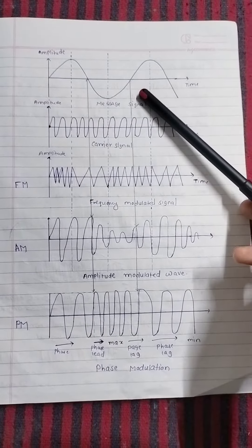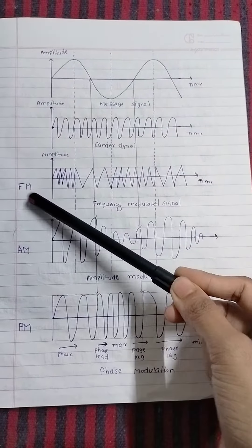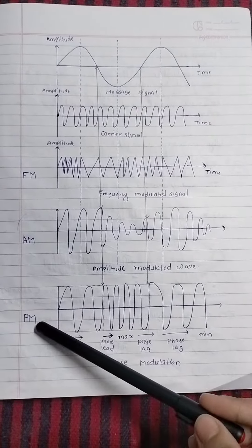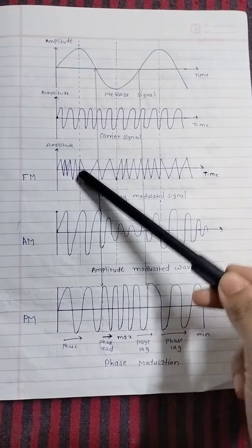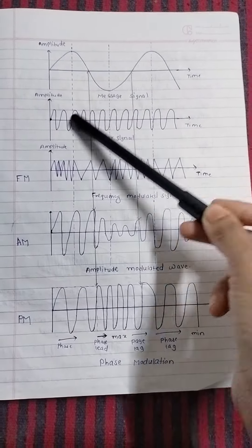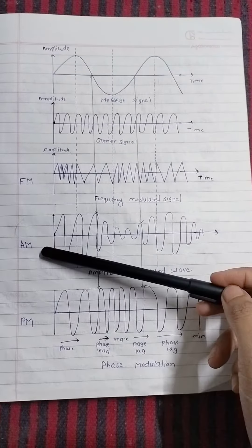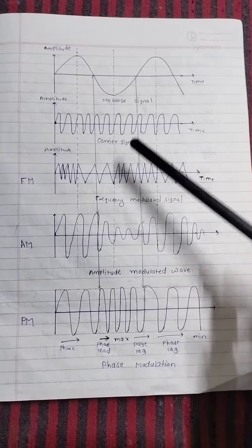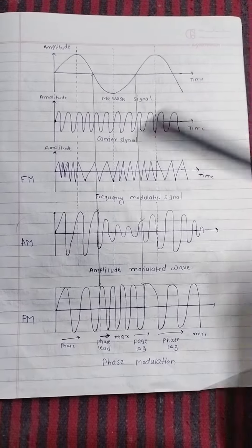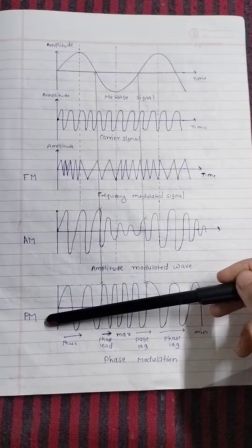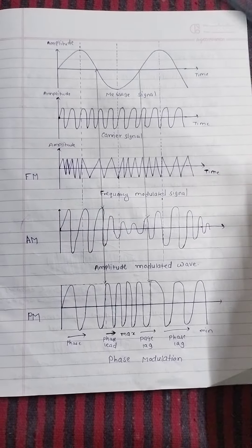The parameters that change are frequency, amplitude, and phase. In frequency modulation, the frequency of the carrier signal changes according to the original signal. In amplitude modulation, the amplitude of the carrier signal changes according to the original signal. And in phase modulation, the phase of the carrier signal changes according to the original signal.